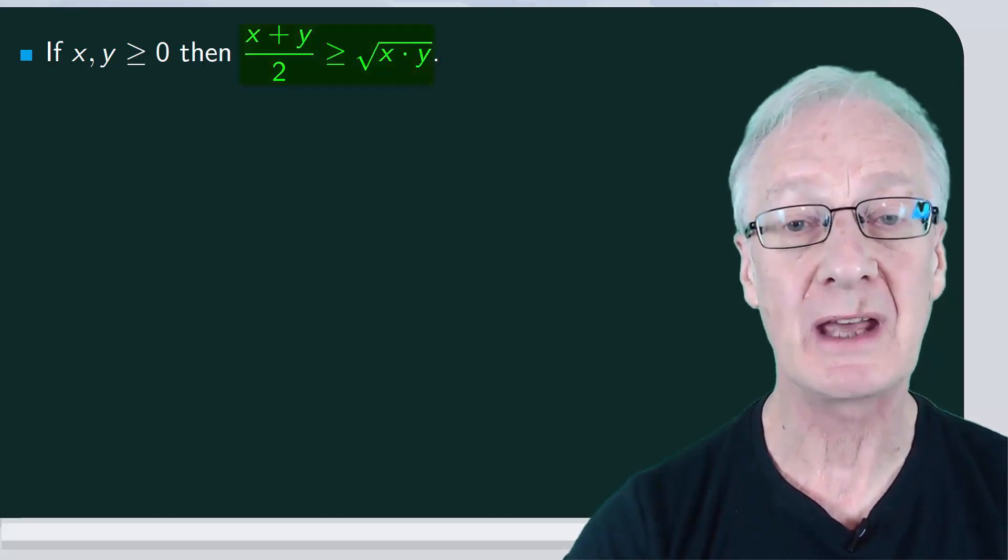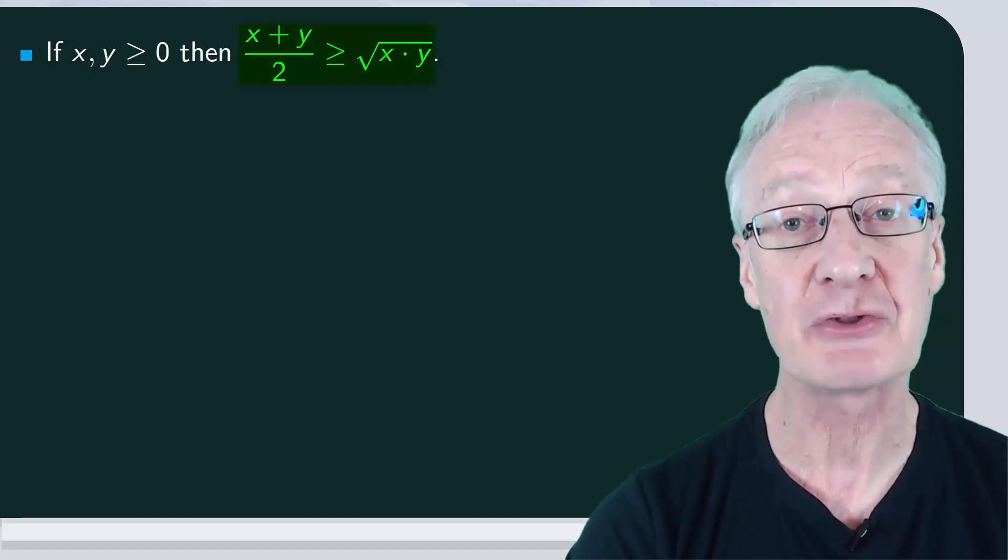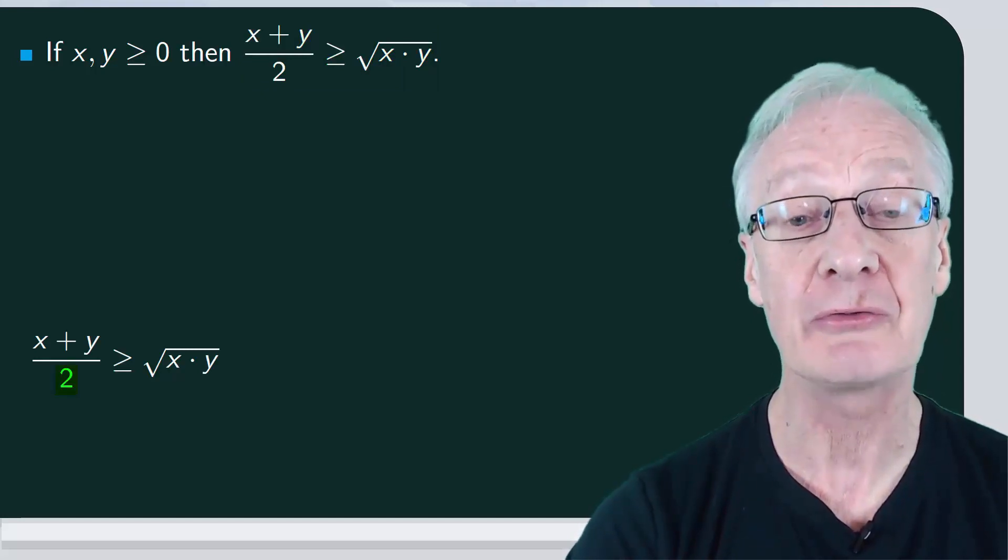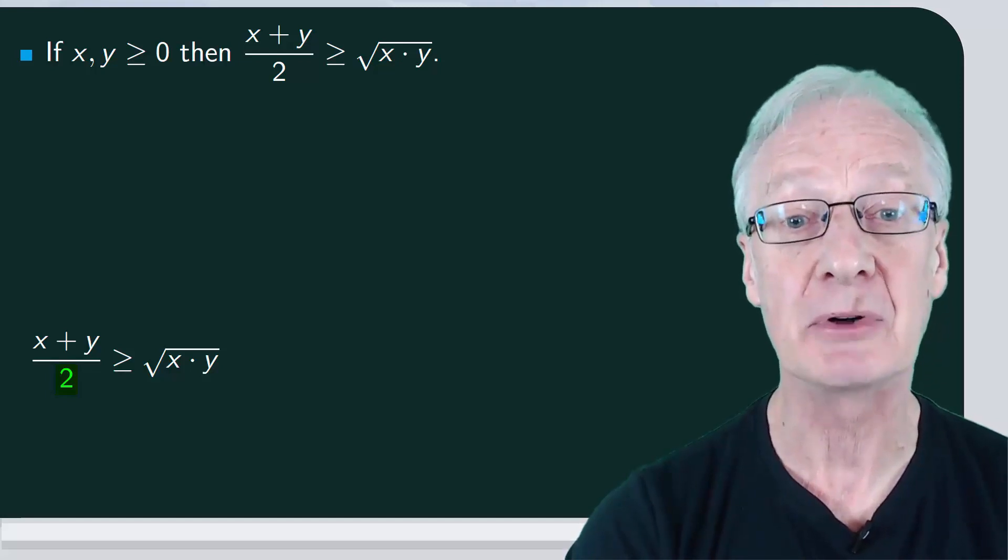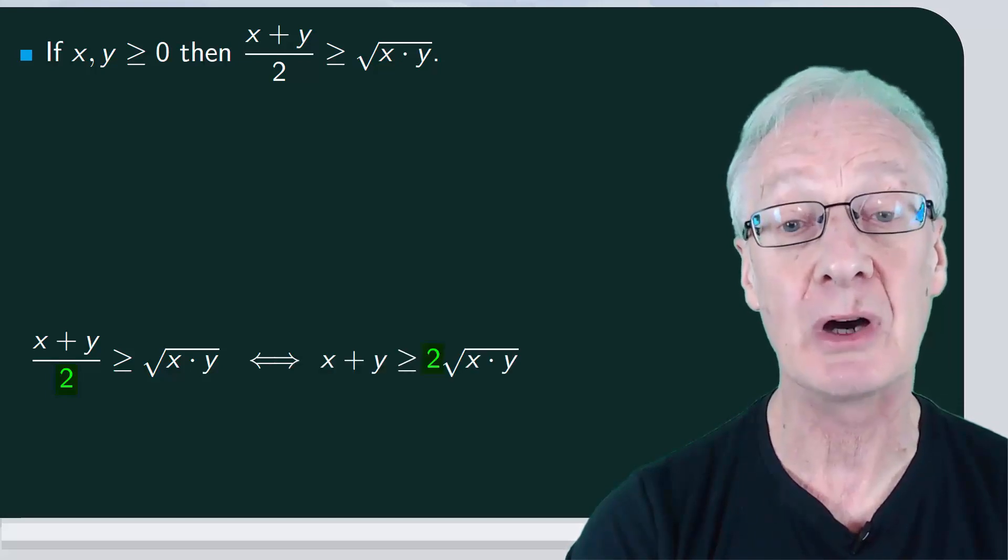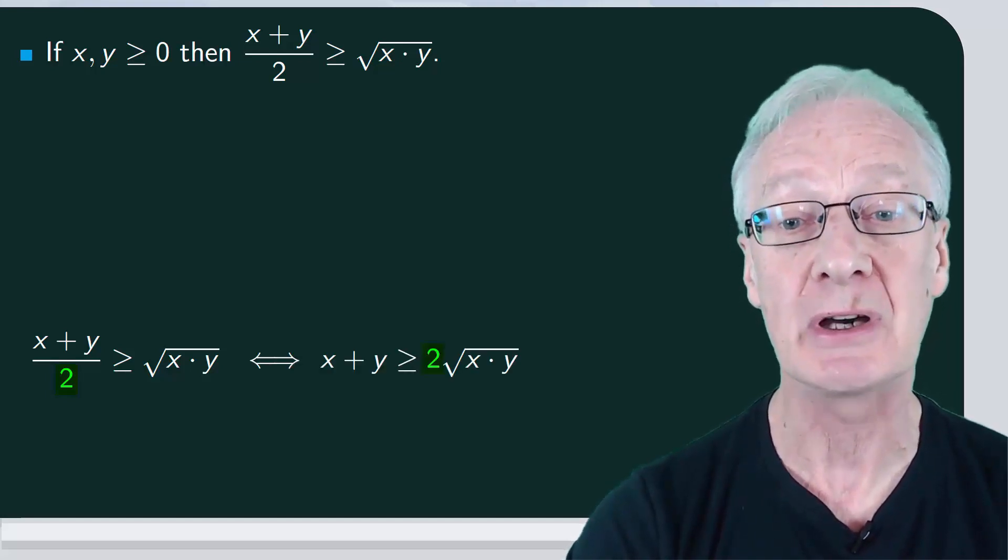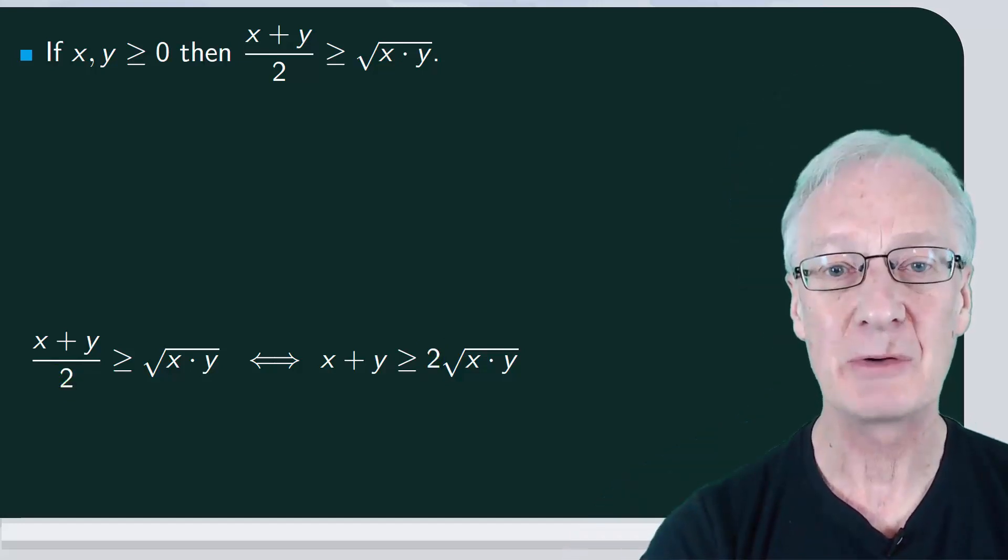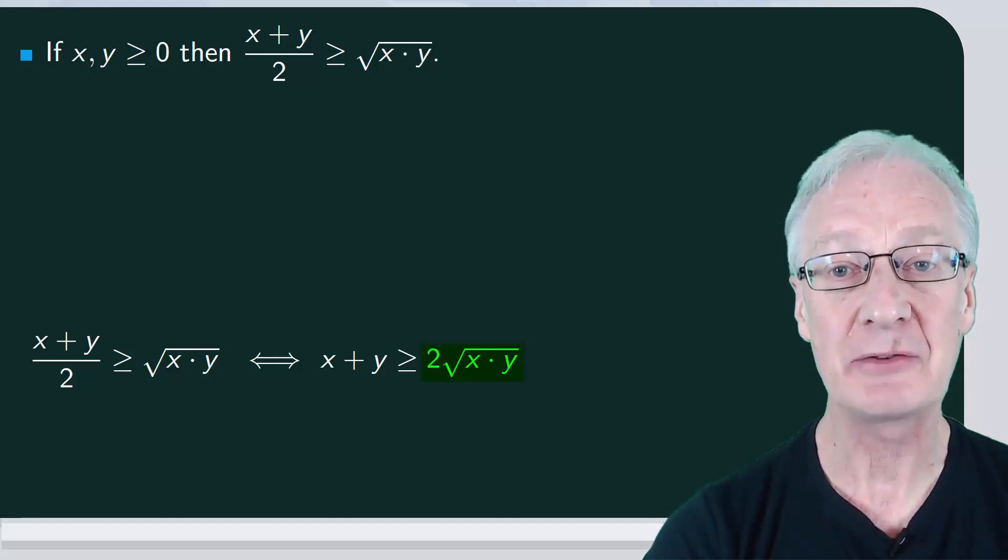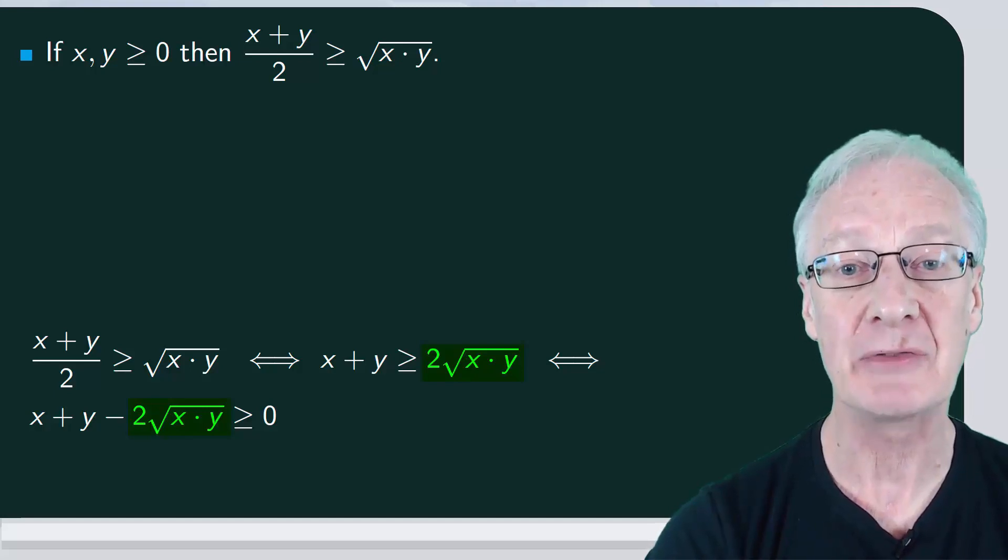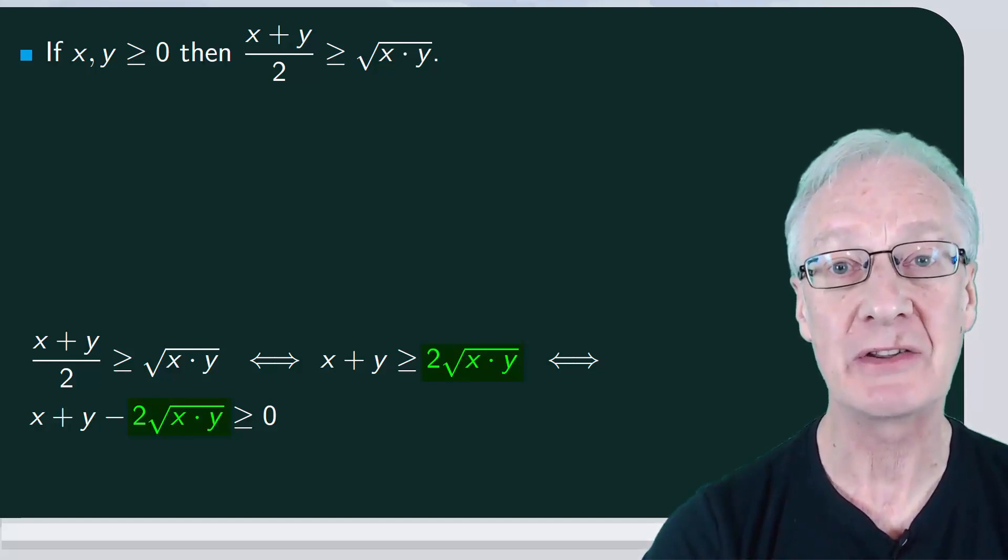First we'll work with the expression to be proved for as long as it takes for a strategy to emerge. In our case, we can move the 2 from the left side to the right by multiplying. Since it's a positive number it doesn't change the sense of the inequality and we get that x plus y is greater than or equal to 2 times the square root of x times y. Now we can move the element from the right side to the left by subtracting to give x plus y minus 2 times the square root of x times y is greater than or equal to zero.